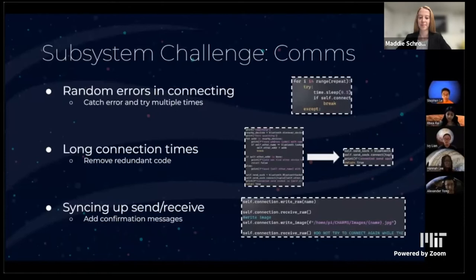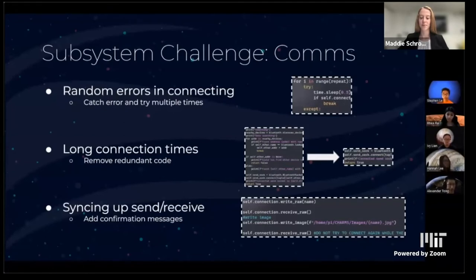For comms, we had numerous issues that required consistent testing. One was random errors in connections — to solve this we added a try-except statement and repeated the connection if an error was found. Another issue was long connection times ranging from 15 seconds to a minute — we found some code was redundant and brought the time down to five seconds by deleting it. We also encountered errors when the Raspberry Pi thought one message was sent when two were actually sent — this was solved by adding confirmation responses throughout the code.